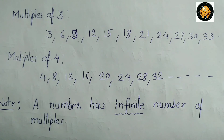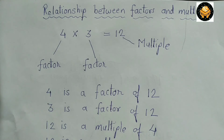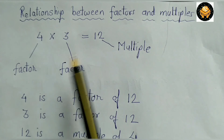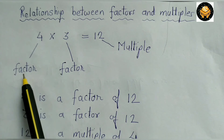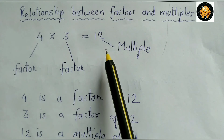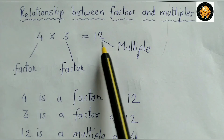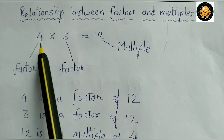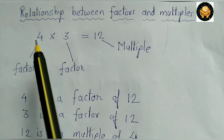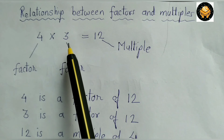You should keep in mind that a number has an infinite number of multiples. Now let's see the relationship between factors and multiples. When we multiply 4 by 3, we get the product 12. Here, 4 is a factor of 12, 3 is also a factor of 12, and 12 is a multiple of both 4 and 3.